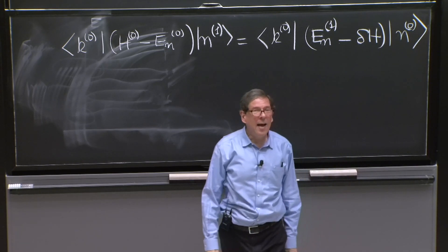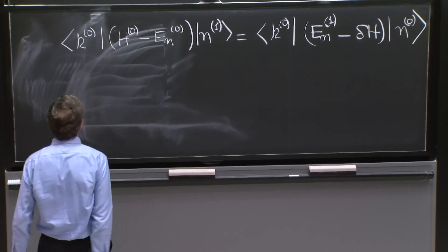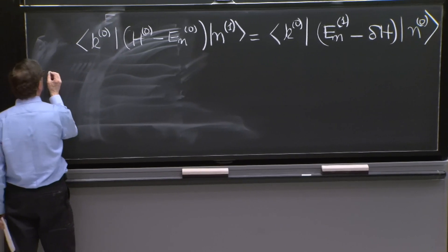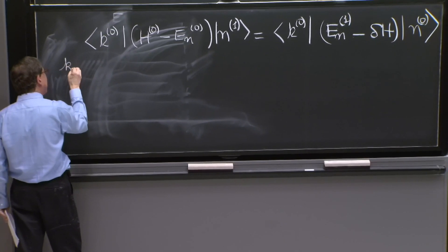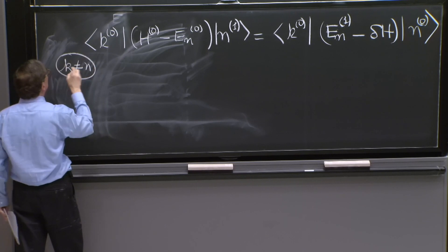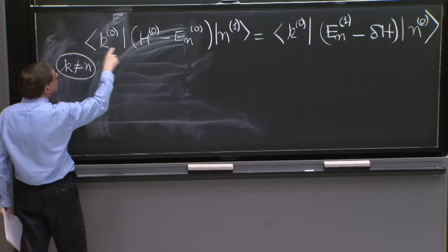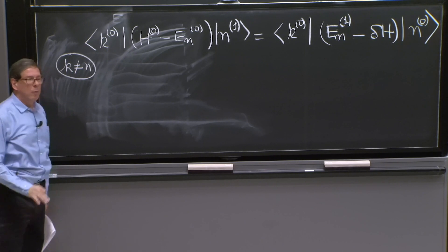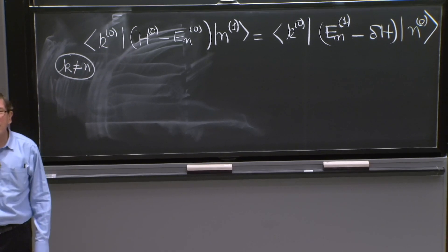minus delta H, n0. So I now took the same equation and I put an inner product with k0. And I say, look, k will be different from n, because when we put k equal to n, that we've already done and we've learned all about it.